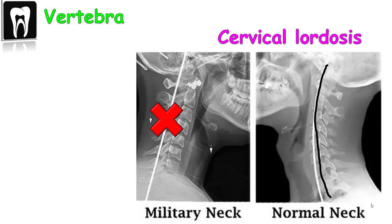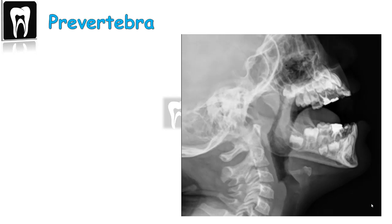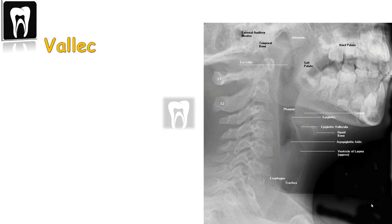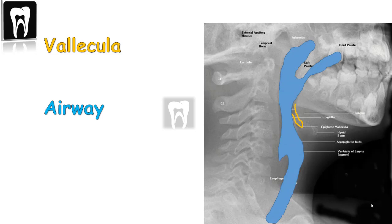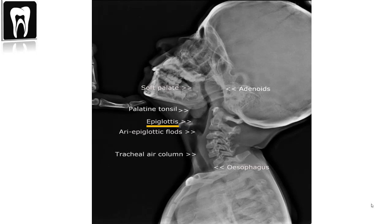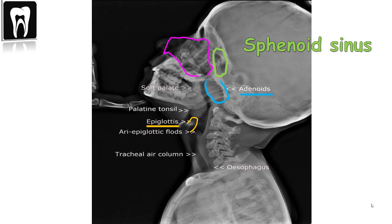The soft tissue in front of the vertebra is called the prevertebral shadow, and its size is very important. All the black area is the airway and around it is soft tissue. Here you can see the epiglottis, the nasal cavity, and in the skull base the sphenoid sinus. Any soft tissue hanging down underneath the sphenoid sinus is the adenoid.